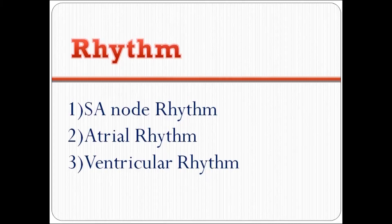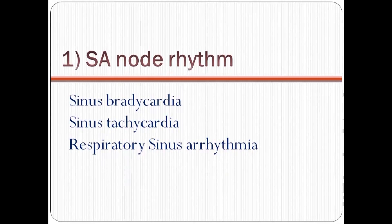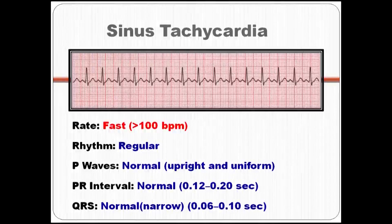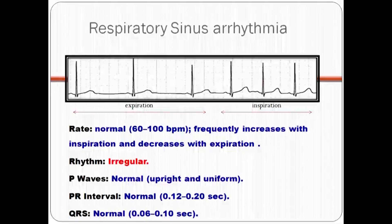Rhythm is divided into SA node rhythm, atrial rhythm, and ventricular rhythm. SA node rhythm means it originates from the SA node, so the P wave is normal and the QRS complex is narrow. This includes sinus bradycardia, sinus tachycardia, and respiratory sinus arrhythmia. Sinus bradycardia is everything normal except the rate is less than 60 beats per minute. Sinus tachycardia is everything normal except the rate is more than 100 beats per minute. Respiratory sinus arrhythmia is a normal phenomenon where the rate increases on inspiration and decreases on expiration.